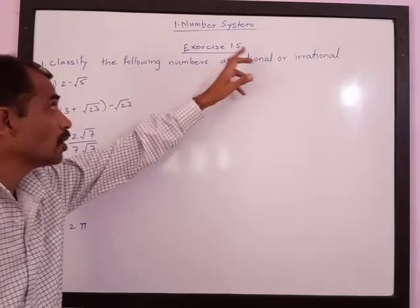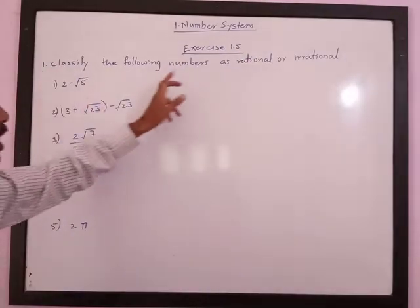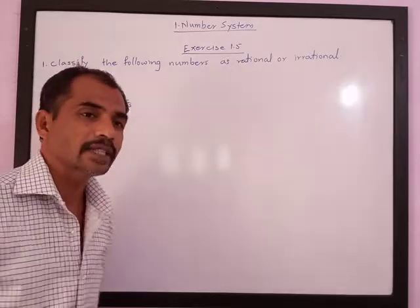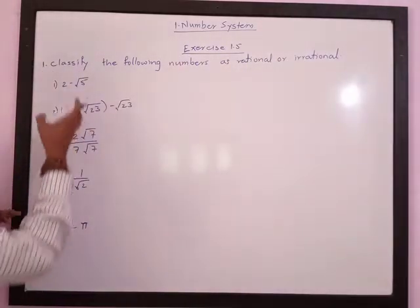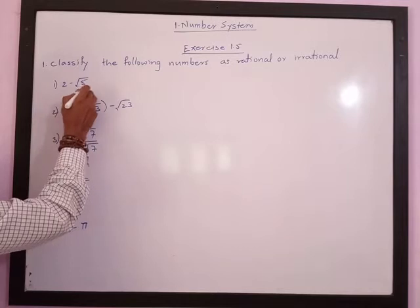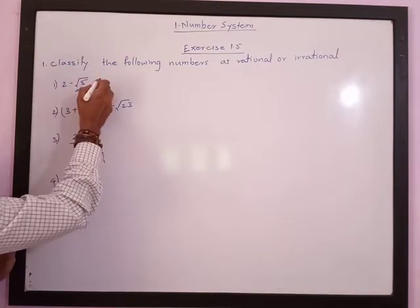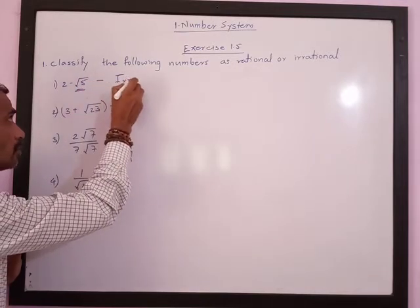Next is Exercise 1.5: Classify the following numbers as rational or irrational. We are asked to write whether these numbers are rational or irrational. Root 5 is an irrational number, so 2 minus root 5 is also irrational.